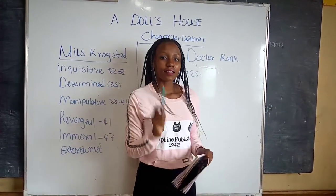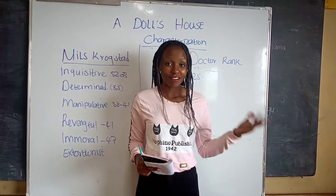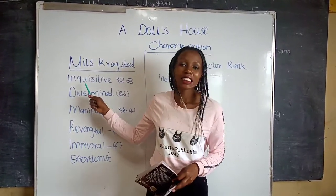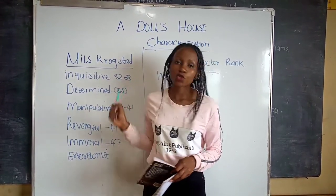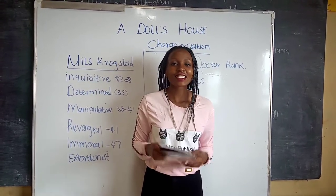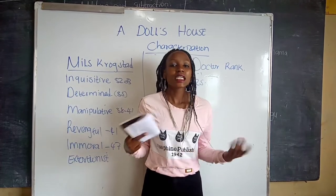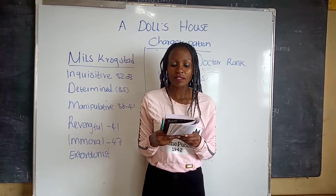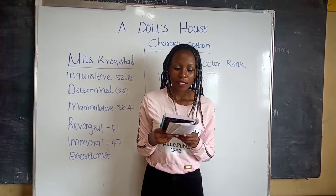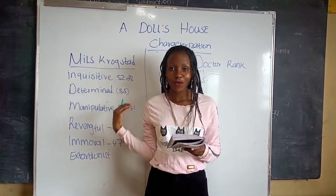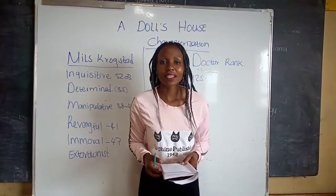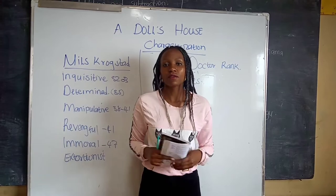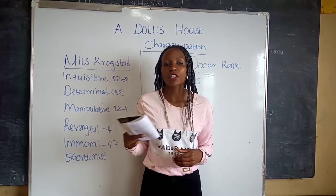The next character is Nils Krogstad. A few things about him: he is a lawyer, and he is an ex-fiancé to Mrs. Linde. The first trait: he is inquisitive, that is on pages 22 to 33. An inquisitive person is one who asks a lot of questions. On page 33, he asks a lot of questions about Mrs. Linde: 'May I make so bold as to ask if it was a Mrs. Linde just arrived in town?' — and some similar questions. So he is inquisitive. He is also determined — determined to keep his small post in the bank. He said he will fight for that post as if he was fighting for his own life. That is page 35: 'Listen to me, Mrs. Helmer. If necessary, I am prepared to fight for my small post in the bank as if I was fighting for my life.'